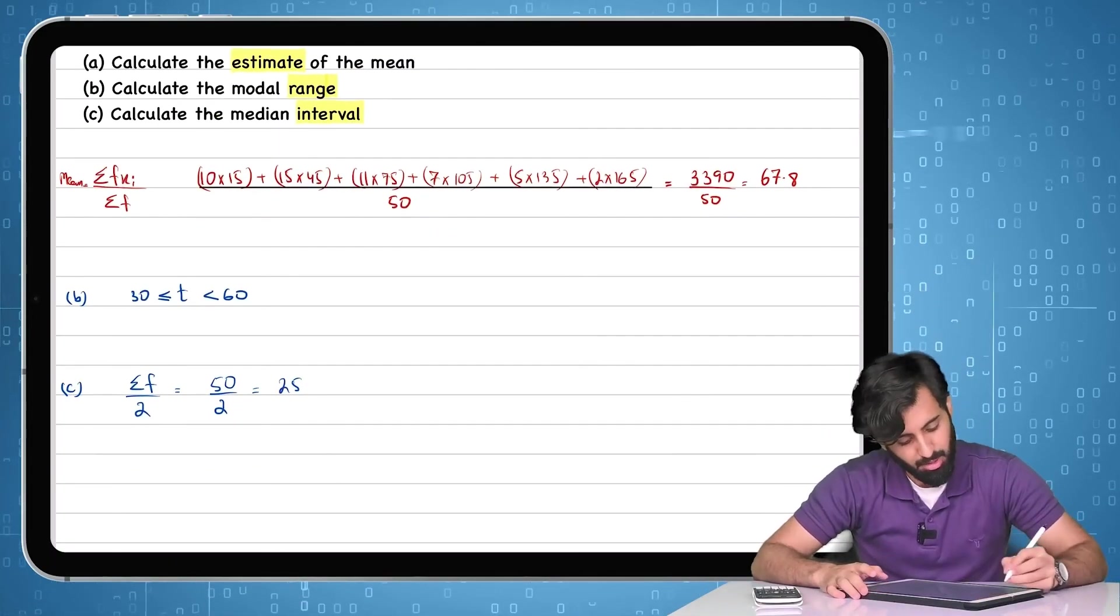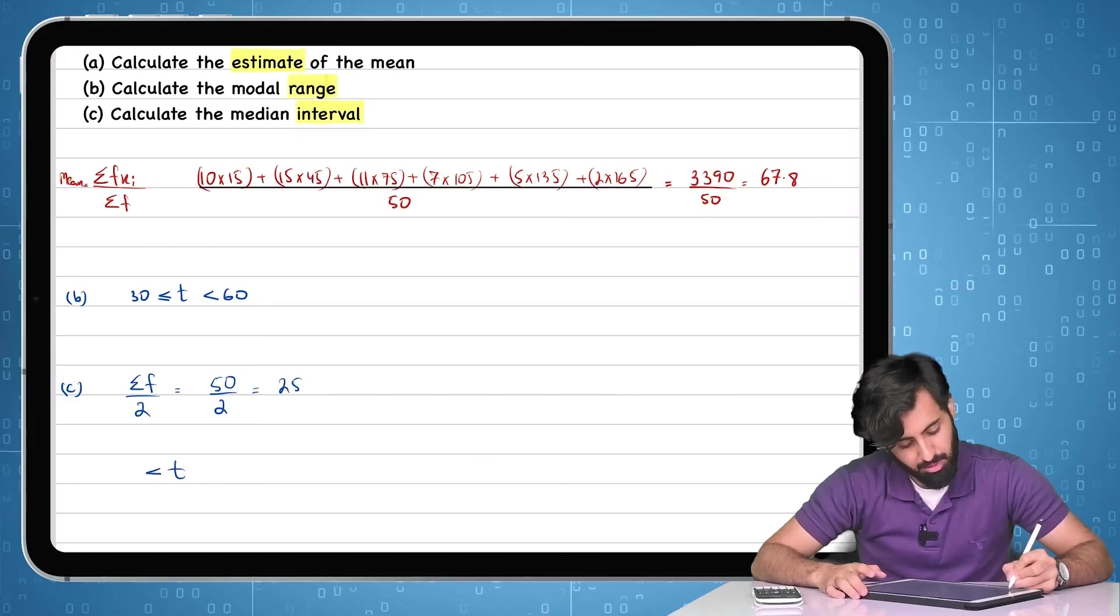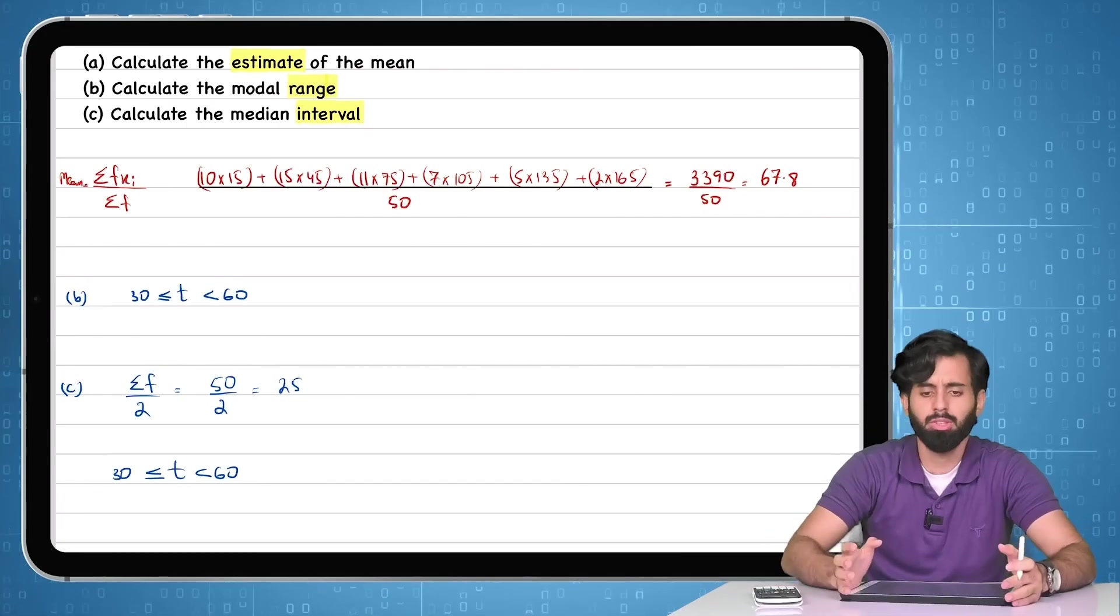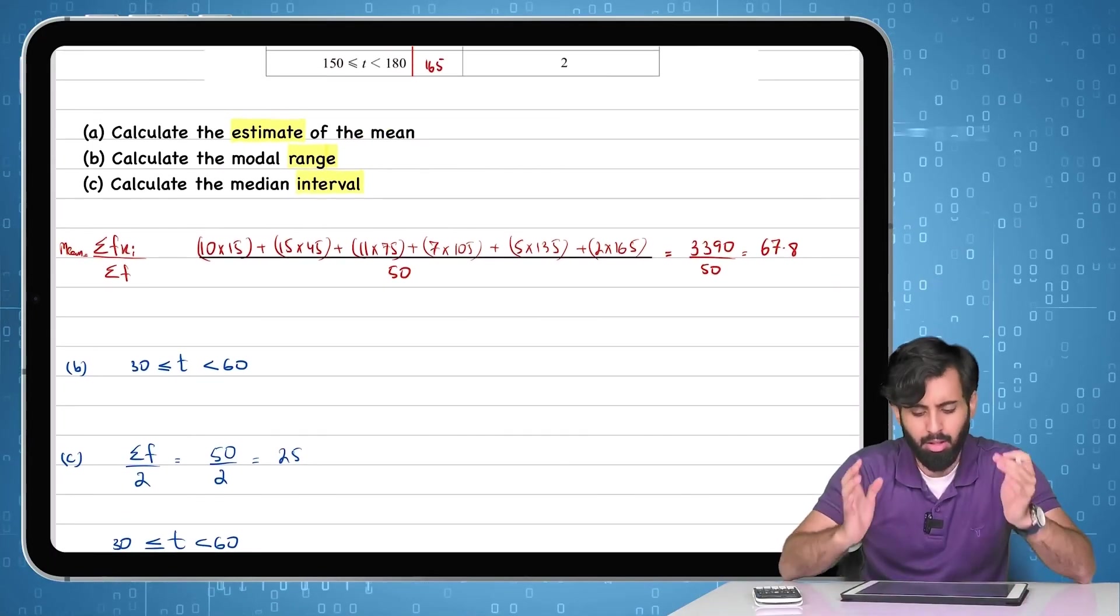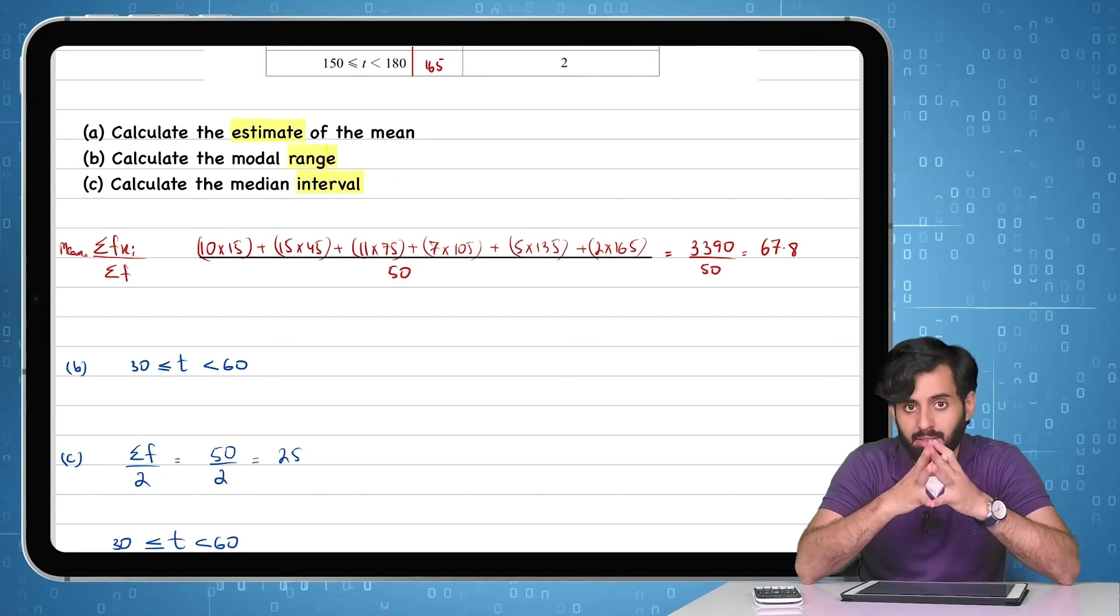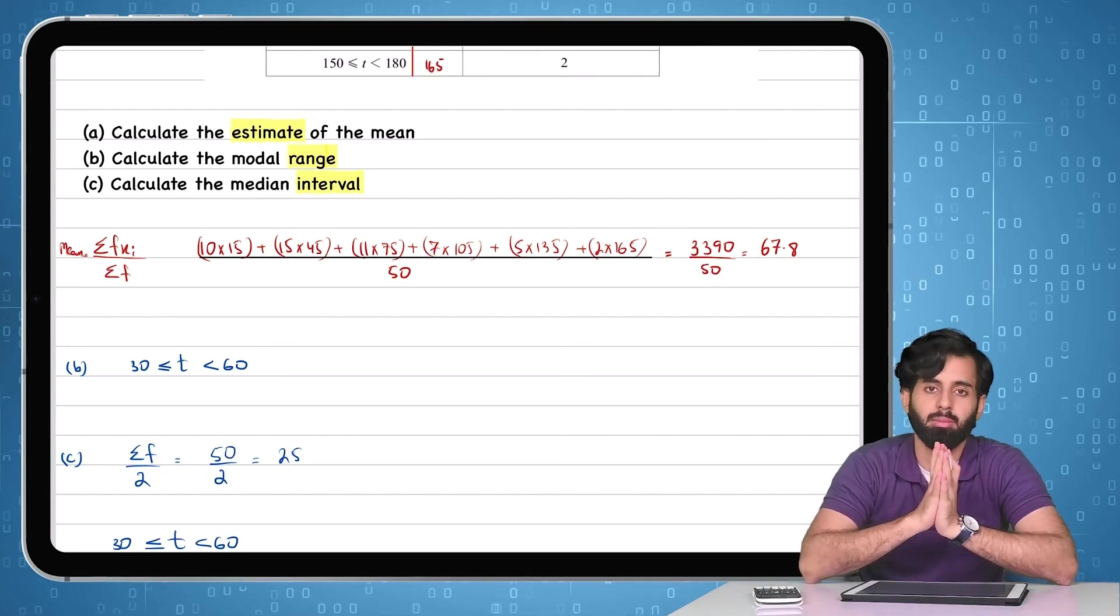So that means that the median interval is also greater than or equal to 30, less than 60. So I hope this concept is clear to all of you. Now we will do another example, but not in this video, in the next one. So I'll see you guys in the next video. Until then, take care. Bye-bye.